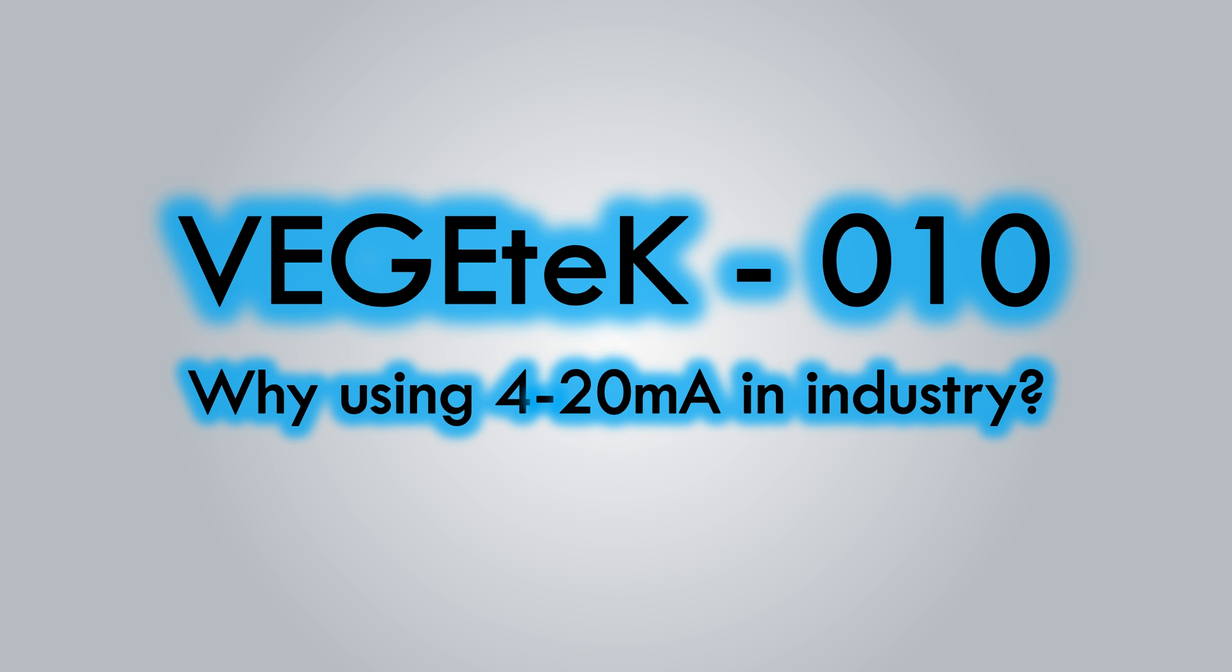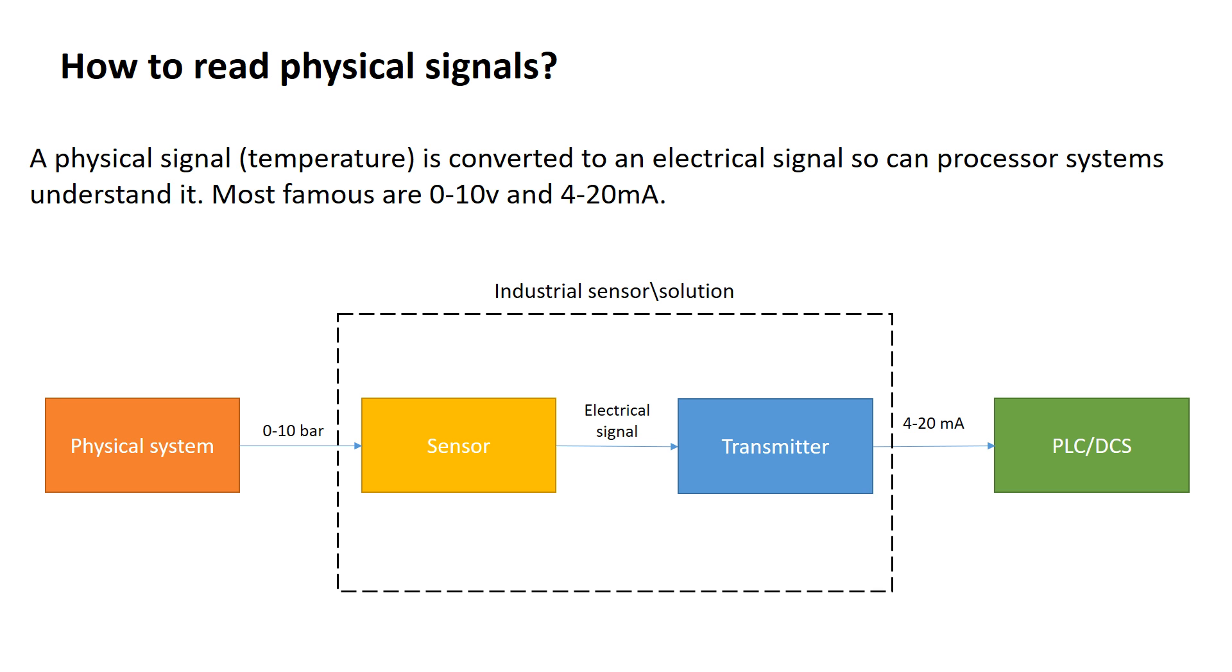Welcome to episode number 10, where we will discuss why we use 4 to 20 milliamps in industry instead of voltage signals. So let's get started. The physical signal, such as temperature, comes from the physical system itself in the field, for example 0 to 10 bar or a temperature signal.